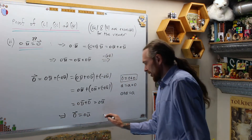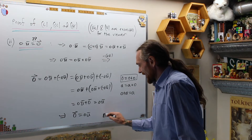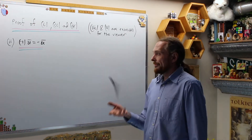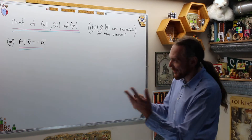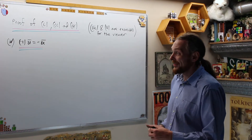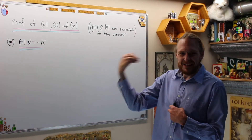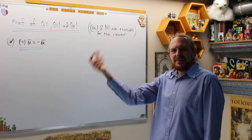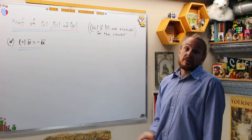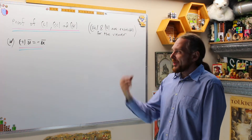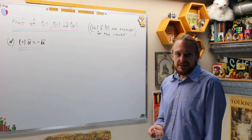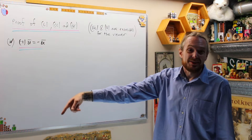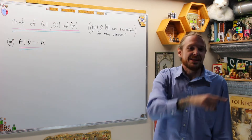That concludes, using transitivity, that zero times U is the zero vector. Now let's do number four. What this is saying is if you multiply a vector — scalar multiply it by negative one — that gives you the additive inverse of U. What I'm going to use is property one, which said the inverse is unique, and then just show that negative one times U is an inverse, and therefore it has to be the inverse.